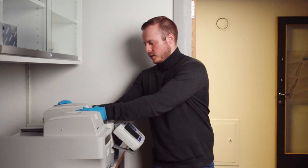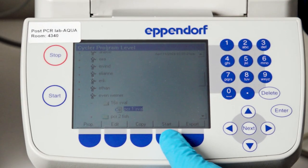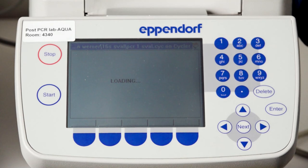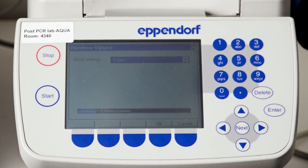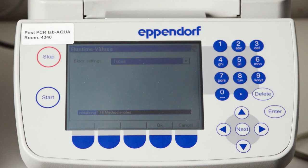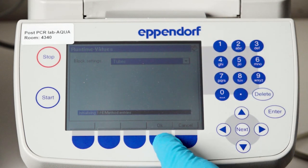After we have done that we close the machine and then we push the start button. Then it says loading program. Since we are running tubes and not a plate in this instance, we need to select tubes and say okay.